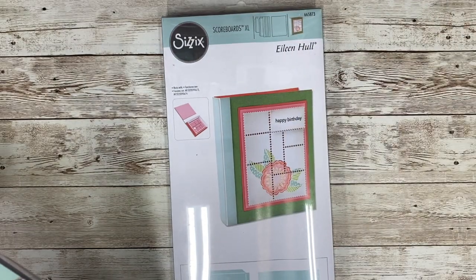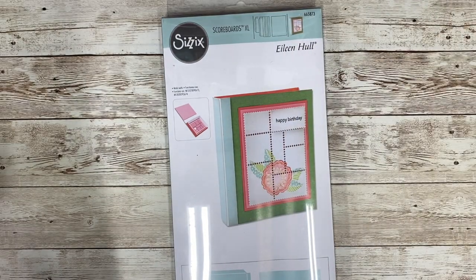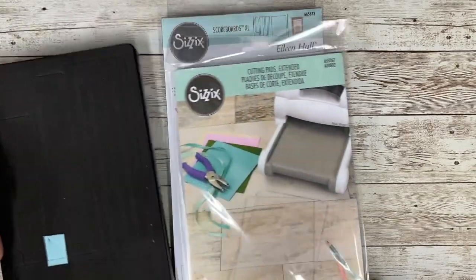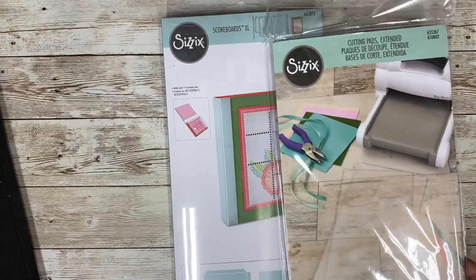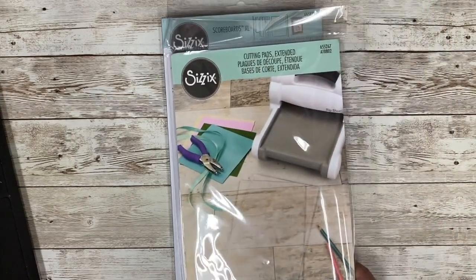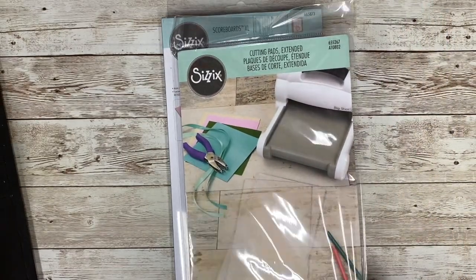Another thing that you're going to need is a set of the extended cutting pads. This will help you when you're running it through because you can see the length of the die. It's long. So you will want these extended cutting pads.